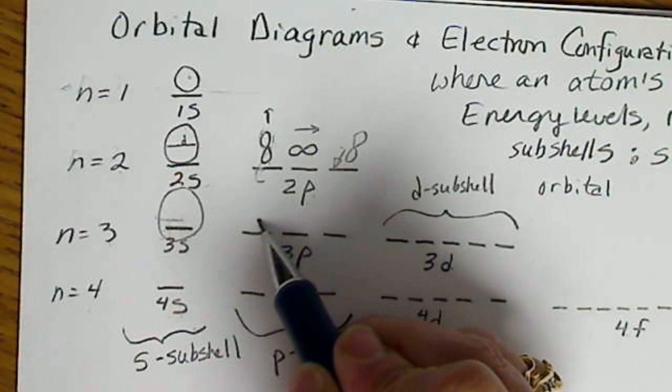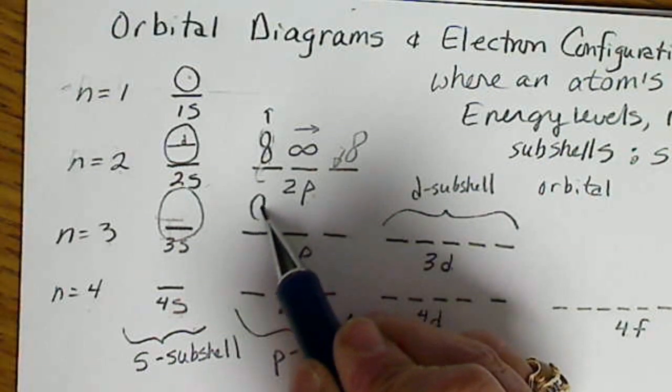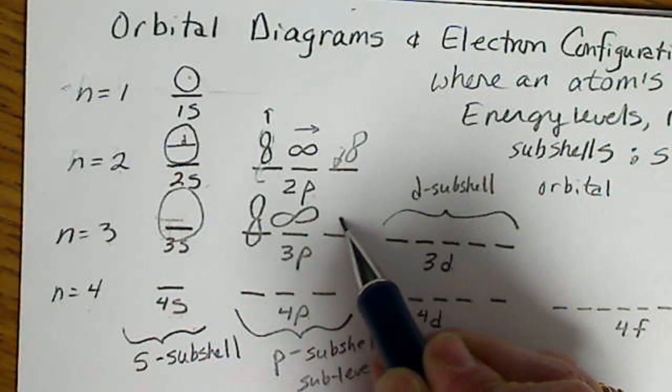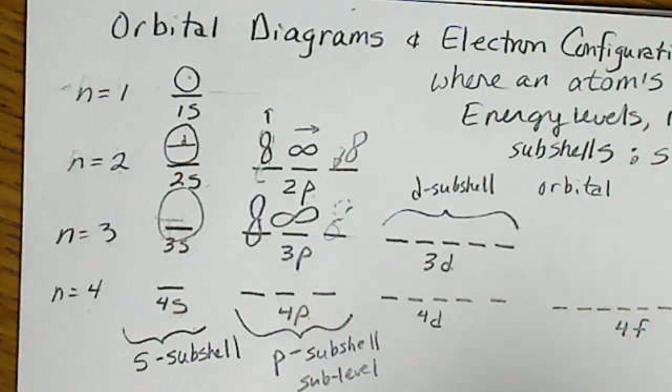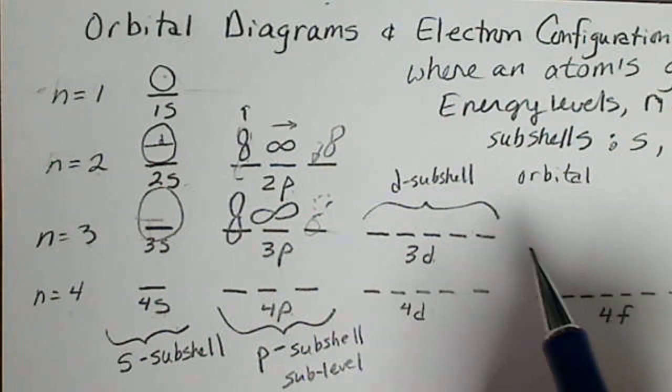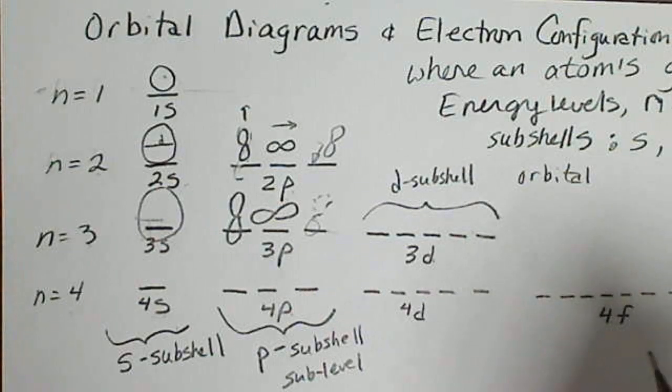So a 3P orbital is just larger. And I'm not going to draw too many of these, because then we'll have a big mess on the paper. The Ds are more complicated shapes, so we're not really going to look at those.